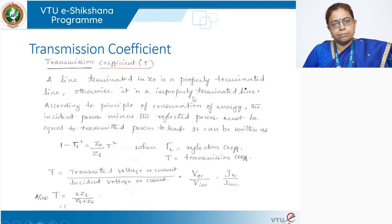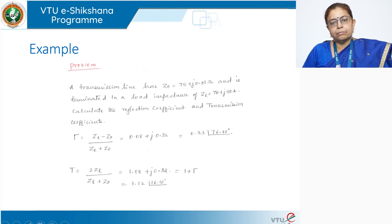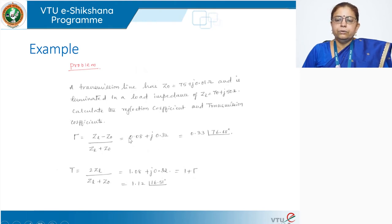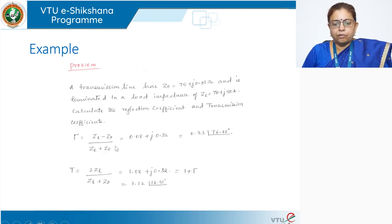In practice, we concentrate more on the reflection coefficient than on the transmission coefficient. Nonetheless, we need to know it as a parameter. There is a simple example in the textbook: given a transmission line with a certain Z0 terminated in a load impedance, you can calculate both the reflection coefficient and the transmission coefficient by substituting values and solving, converting the rectangular form to polar form.